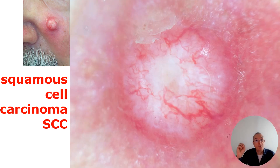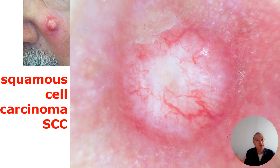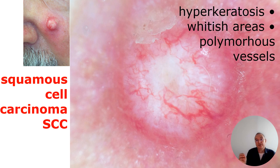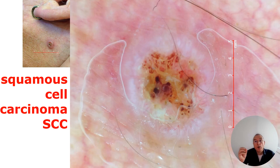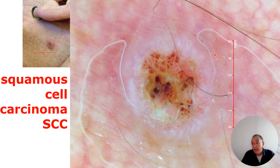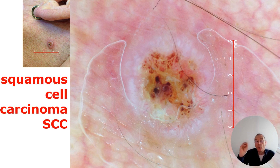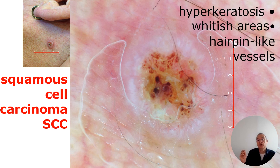A smaller lesion with whitish areas — see the vessels. You might say, oh, this looks a little bit like tree-like vessels. But the whitish areas are for me the hint for SCC. Therefore, I need to do surgery in combination with these polymorphous vessels. We know that we learn from large lesions to small lesions. Hyperkeratotic in the center, but look to the periphery with these whitish areas — therefore, these whitish areas are the hint for the initial SCC.